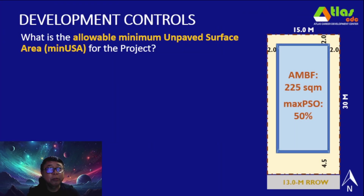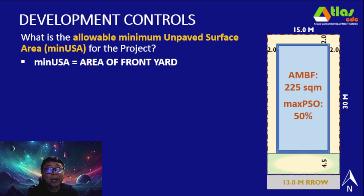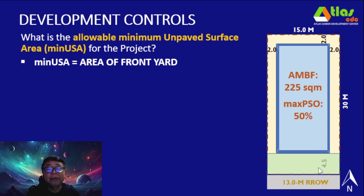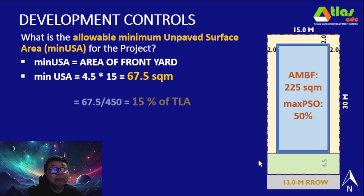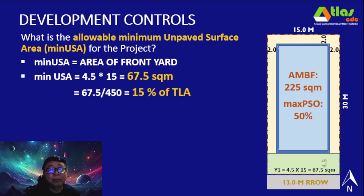Continuing with the computation for open spaces, we have the allowable minimum unpaved surface area, or minimum USA. For an R1 zone property, the minimum USA is equivalent to the area of the front yard using the minimum setbacks. We multiply the 4.5-meter front setback by the lot width of 15 meters, giving a minimum USA of 67.5 square meters, or 15% of the TLA.